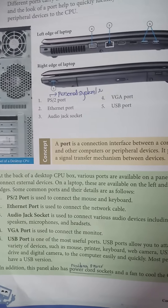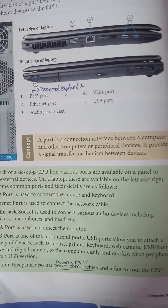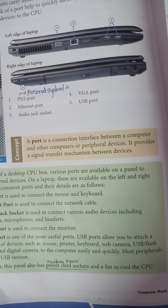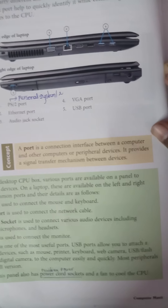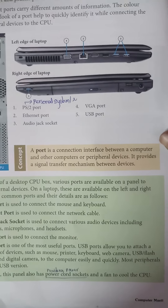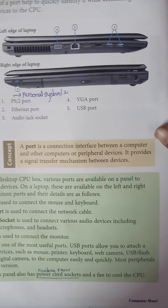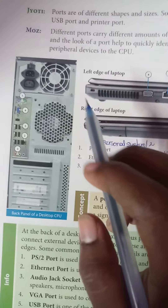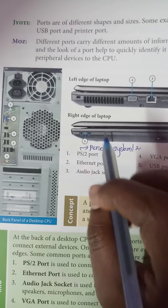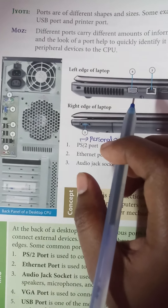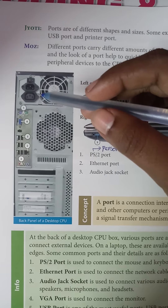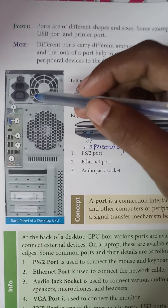In addition, this panel also has a power cord circuit and a fan to cool the CPU. The power cord circuit provides power to your CPU, and there is also a fan to cool the CPU. Here you can see the fan in the CPU. On a laptop you can also see the fan and the connection for the power cord circuit.